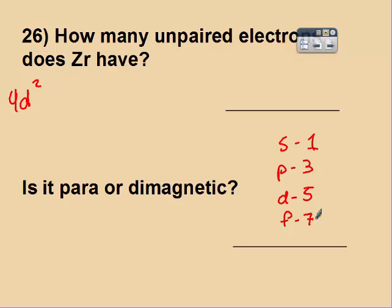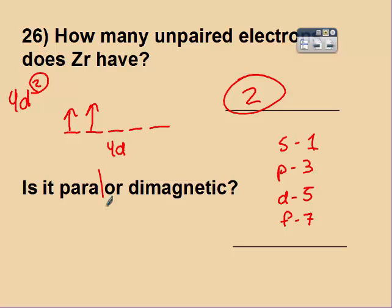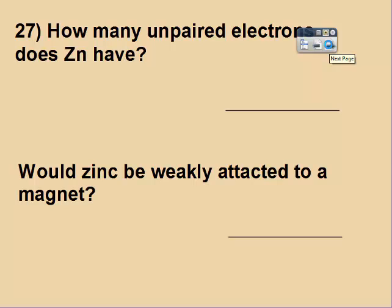So if d has 5 sublevels, 1, 2, 3, 4, 5. Remember when we drew those orbital diagrams, or the energy diagrams, and we had the arrows. So this is the 4d, and it has 2 electrons. Remember according to Hund's rule, the electrons do not pair up until they have to. So it would look like so. So zirconium must have 2 unpaired electrons. And if it has any unpaired electrons, it's paramagnetic.